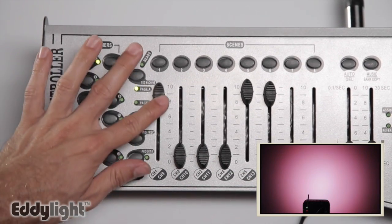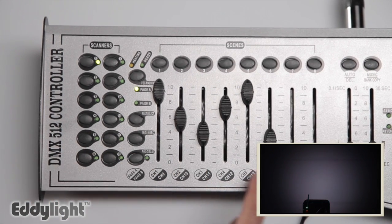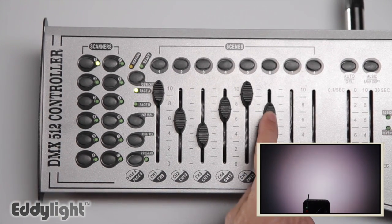But now you also have a master dimmer. So no matter what color you select, you can control the overall brightness easily using channel 6.